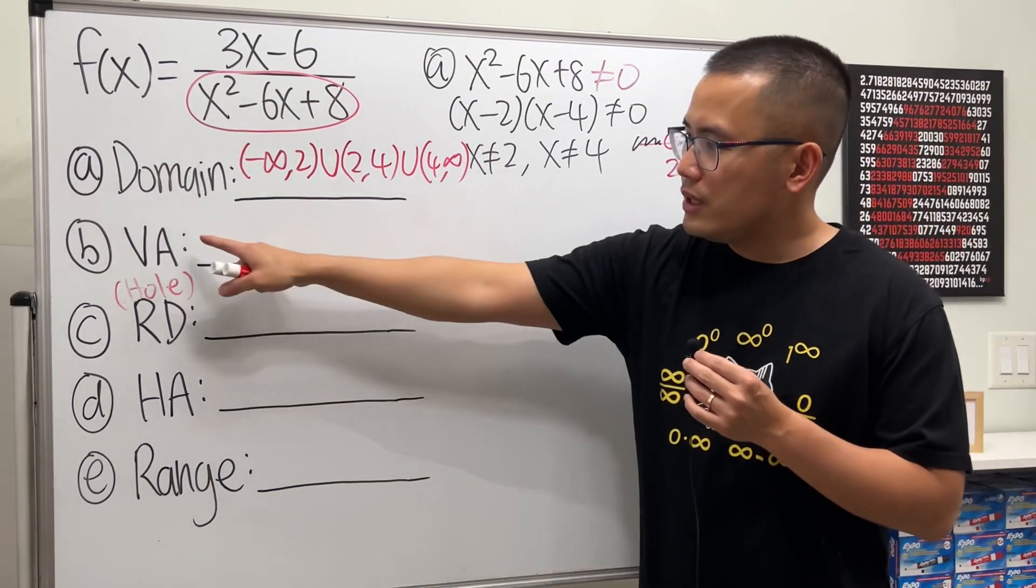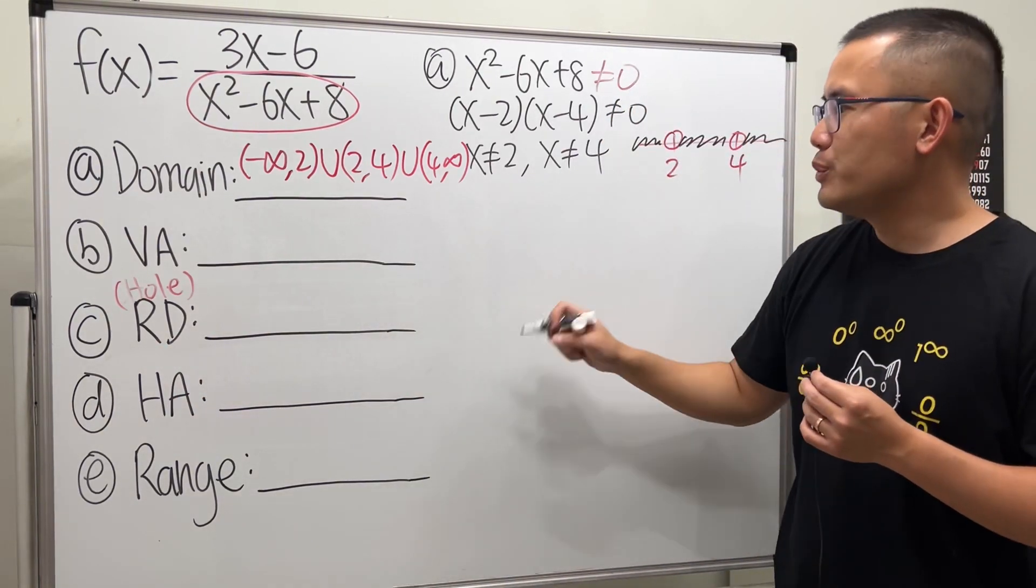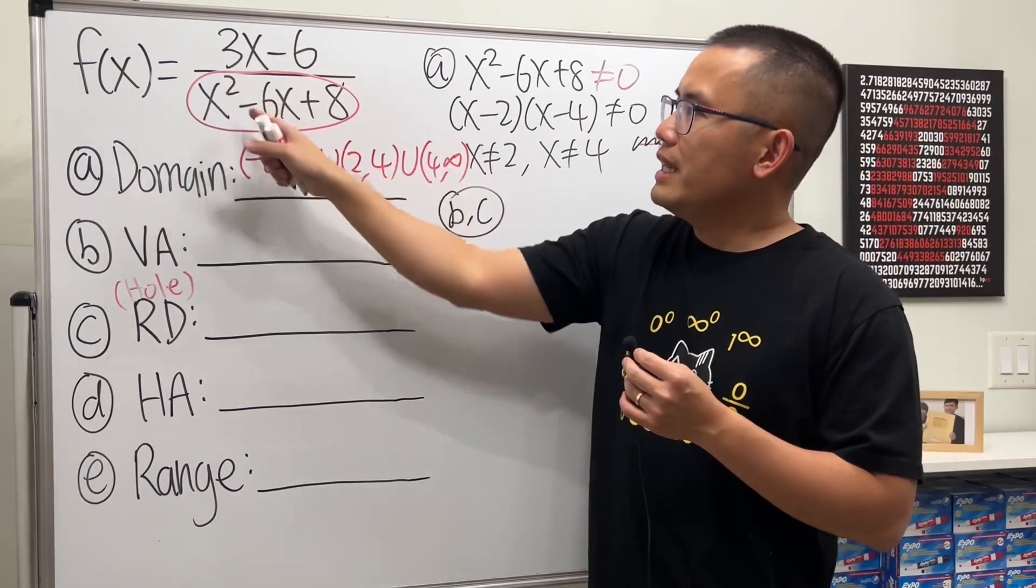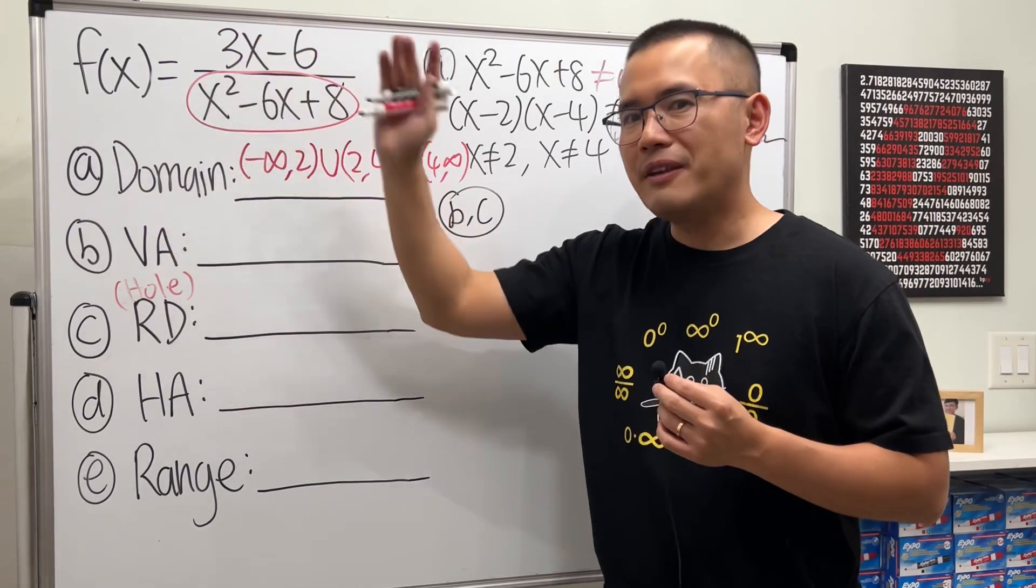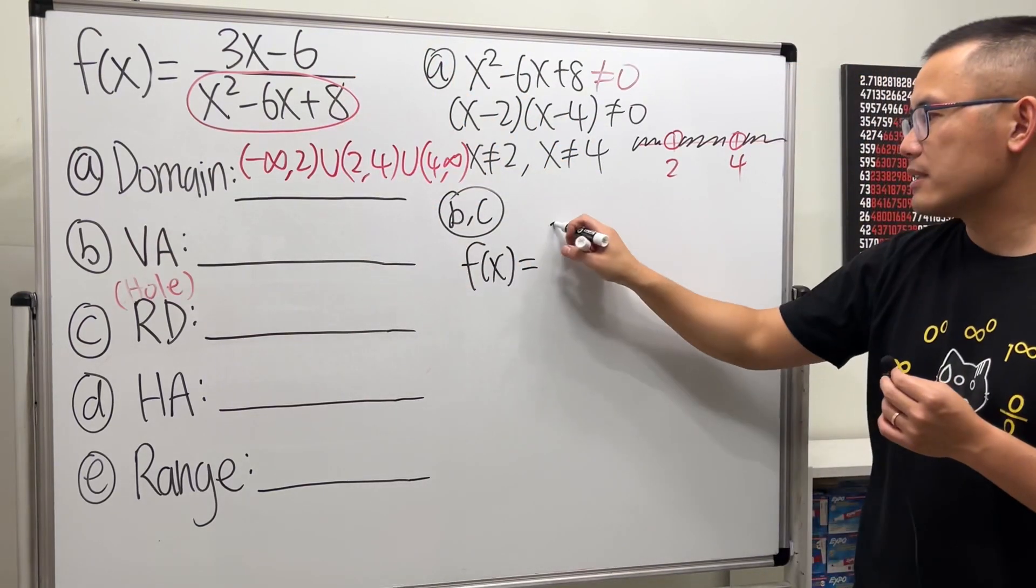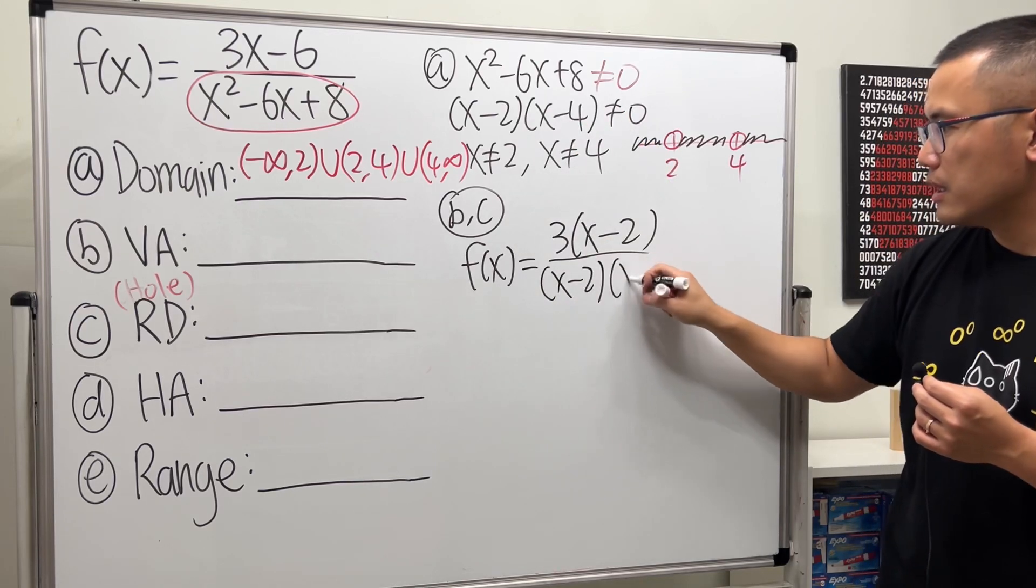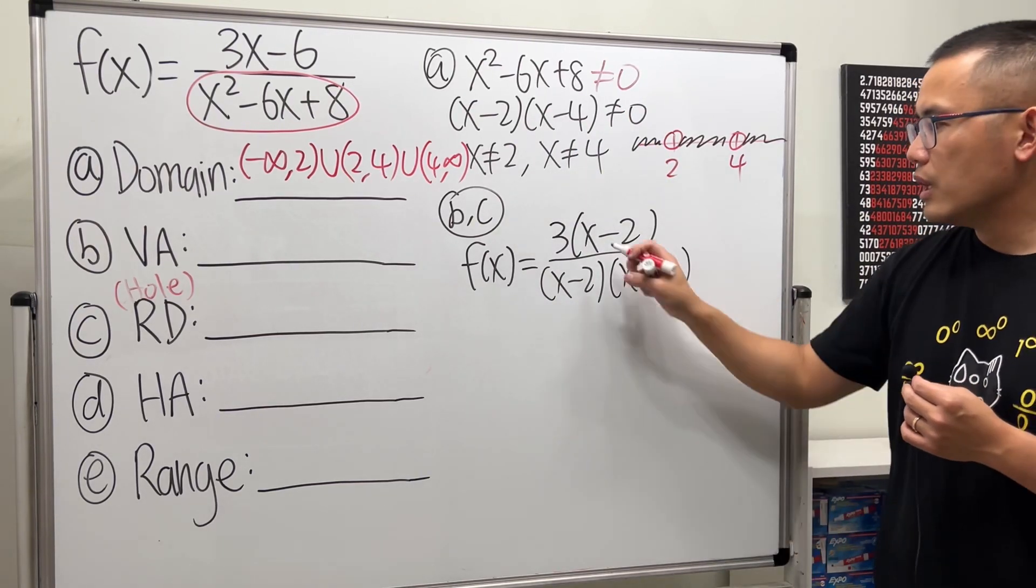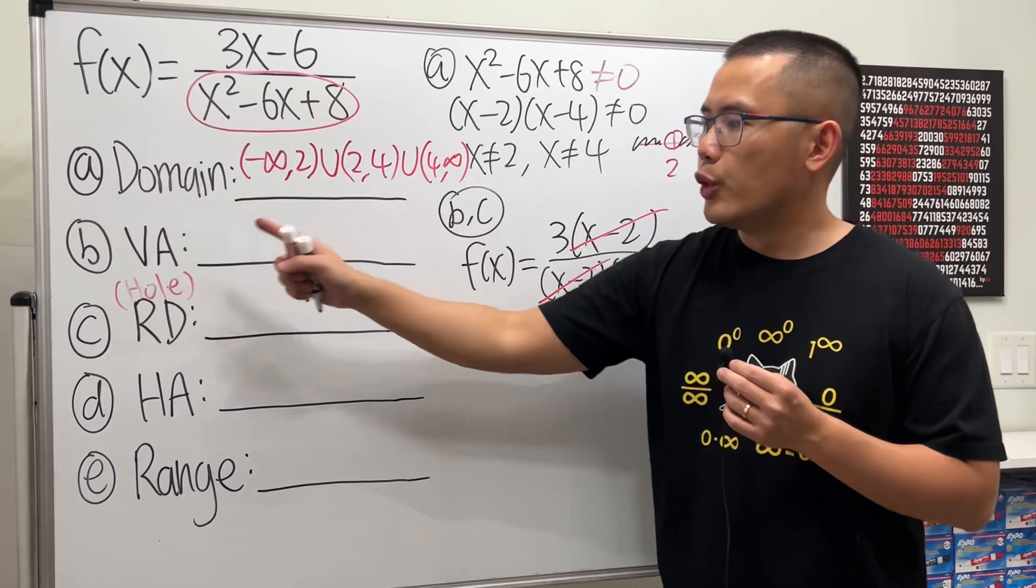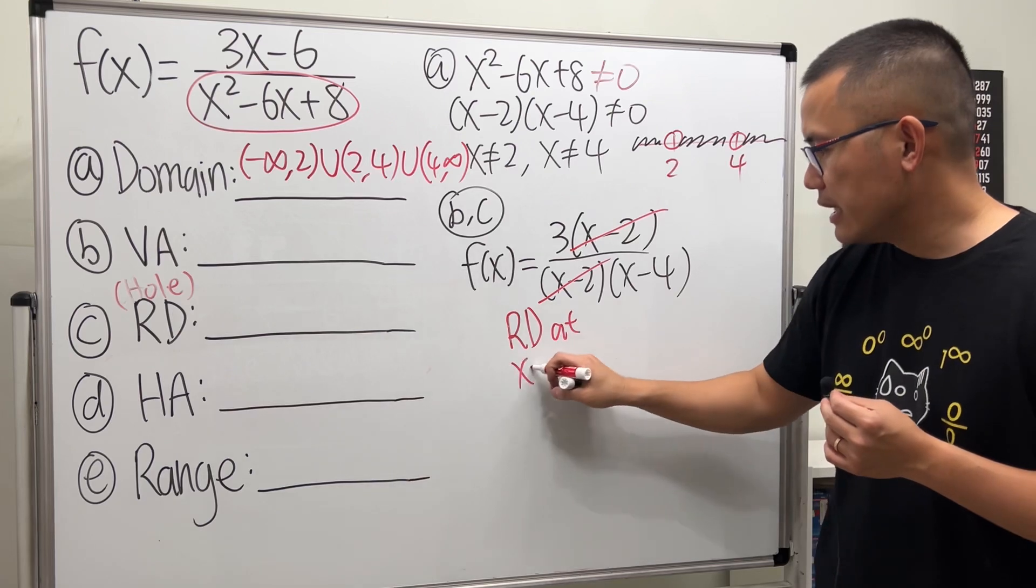Now, for the vertical asymptote and removable discontinuity, they usually go together. So be really careful. This is (b) and (c) together. What we want to do is look at the fraction, factor the top and factor the bottom. So f(x) is equal to, on the top we can factor out a 3. On the bottom is still the same factoring. Now notice, x-2 and x-2, they cancel each other out. And this right here will give us the removable discontinuity. So RD at x = 2.